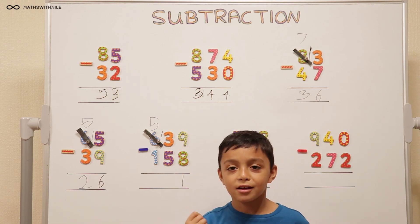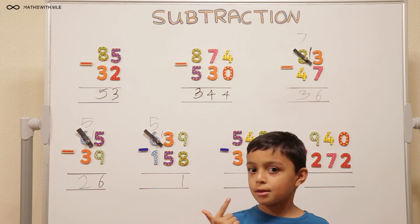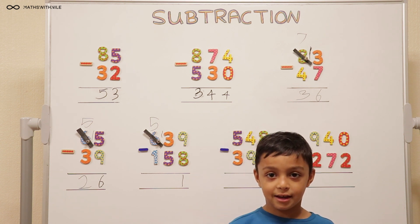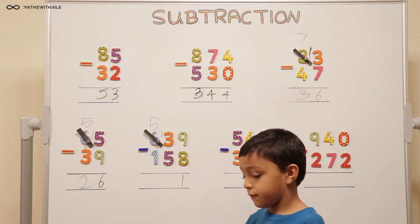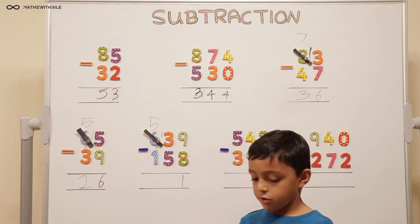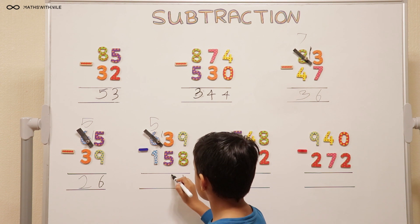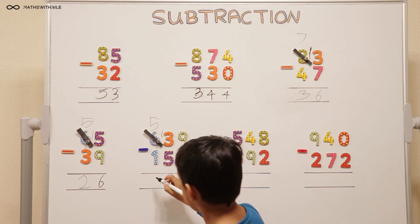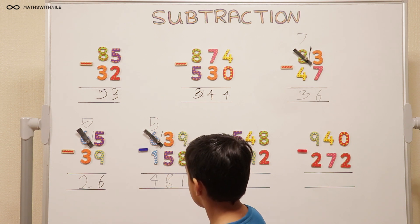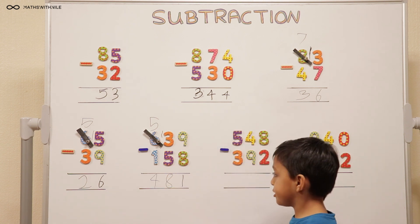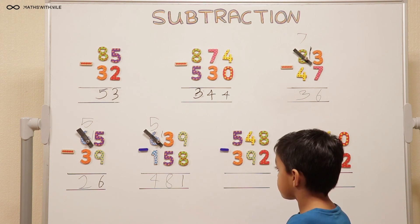5, 6, 7, 8, 9, 10, 11, 12, 13. So 8. 8 goes here. And then 5 take away 1 equals 4. Excellent. So 481. The next one's quite similar to that one. So carry on.